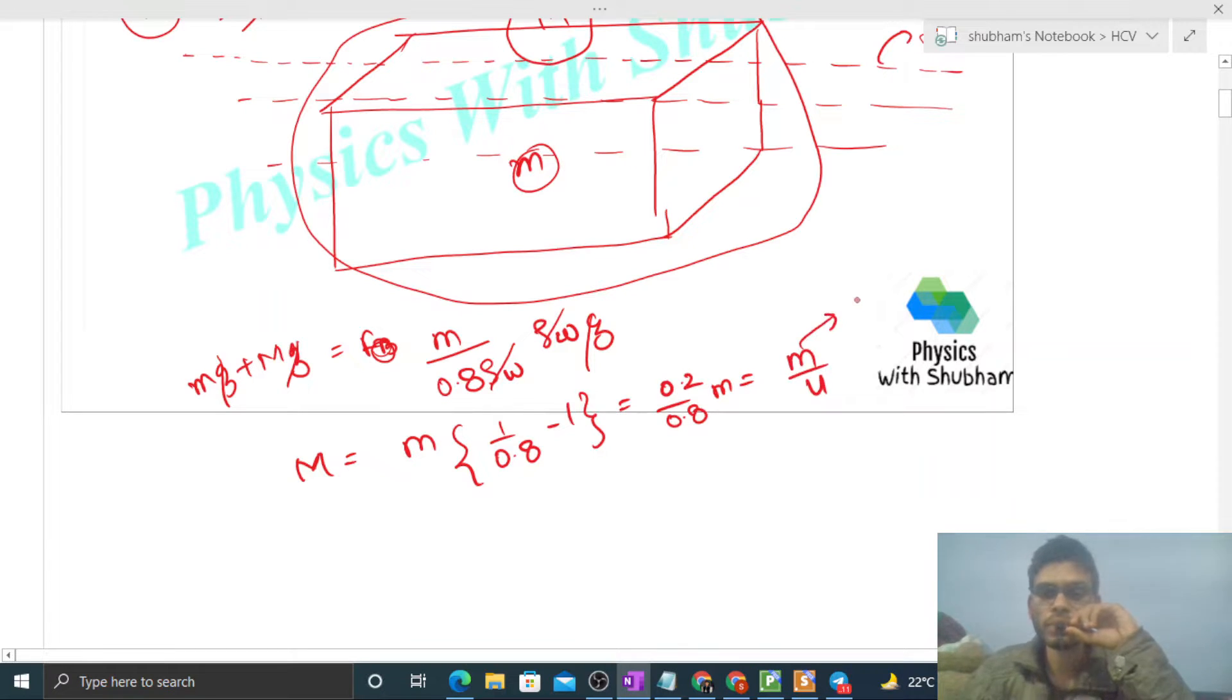Now value of small m is given, that is 200 grams, so 200 by four, that is 50 grams. So this is the value of capital M, that is the mass of the lead.